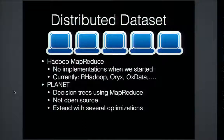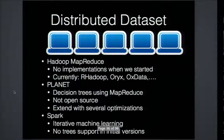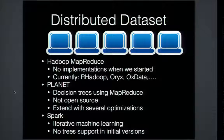We felt we could extend it with several optimizations, and finally we wanted to implement decision trees on top of Spark, which is designed for iterative machine learning. However, there was no tree support in the initial versions of MLlib, and this is the motivation for our work.